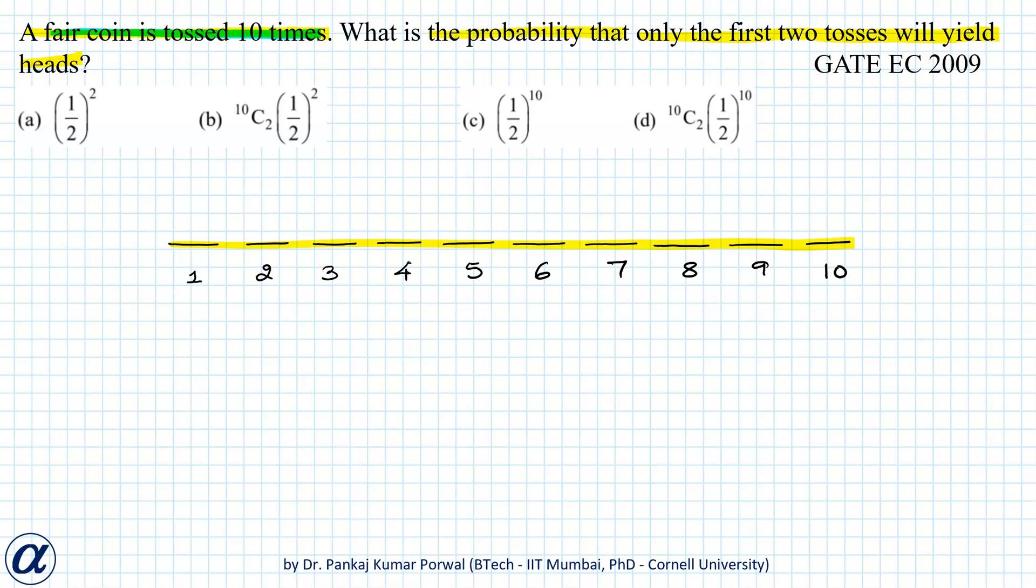We are also given that only the first two tosses will yield heads and the remaining will not yield heads, that means they should yield tails.